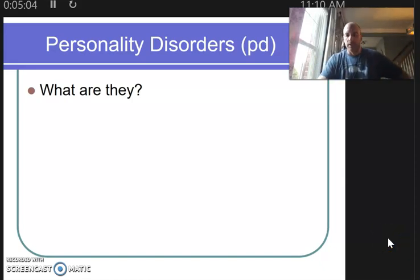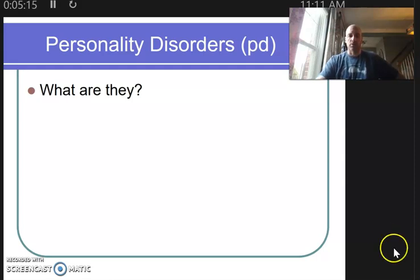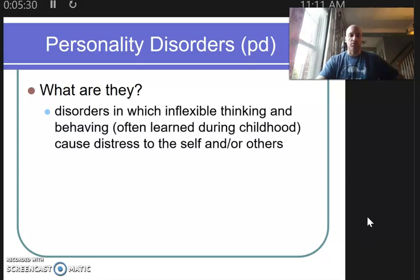The next section in our chapter on psychological disorders covers personality disorders. This will have some overlap from our chapter on personality theory, but this time we're focusing on how a person's personality can cause distress and dysfunction to the self and/or others — which is the definition of abnormal behavior.